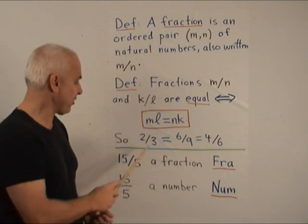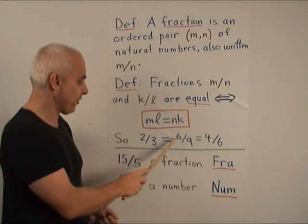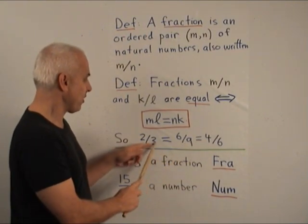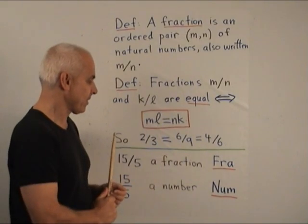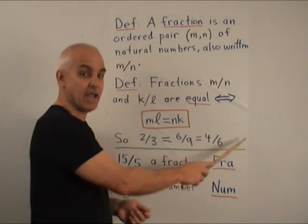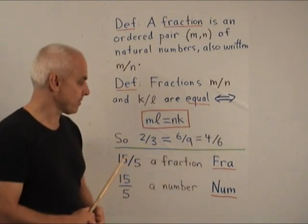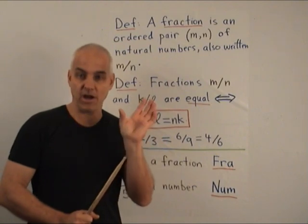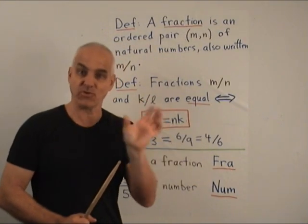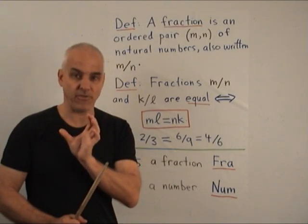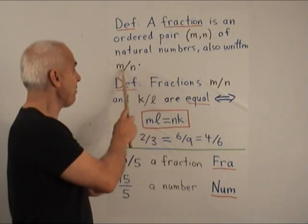So for example, 2 over 3 equals 6 over 9 because 2 times 9 is equal to 3 times 6. And both of those are equal to 4 over 6, and to many other ones. That's a definition of fraction that only depends on our prior understanding of what a natural number is. A fraction is just a pair of natural numbers, which we write m over n.